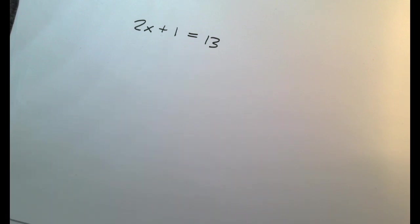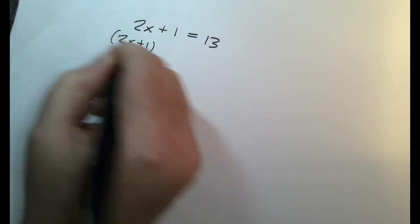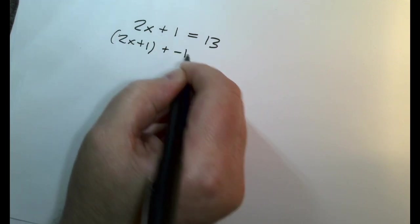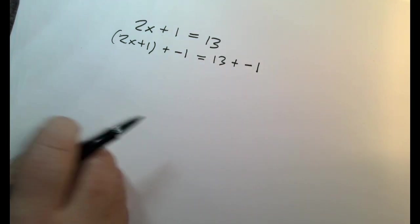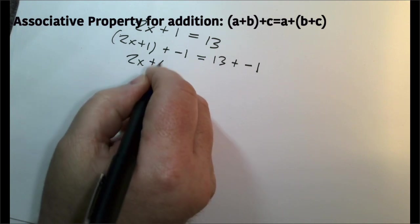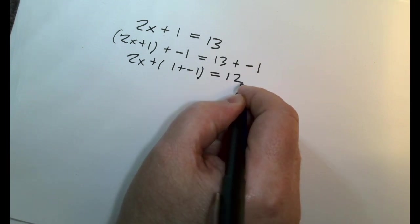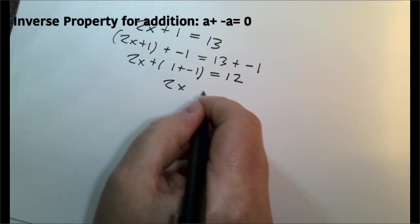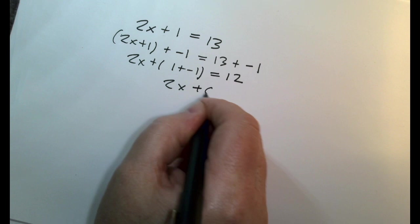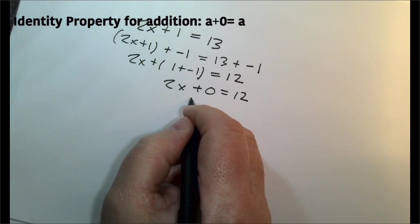So now if we follow the field axioms, we would do 2x plus 1, and we would add the additive inverse of this term to both sides. Use the associative property, combine the two together on this side. Now we use the inverse property, the identity property.